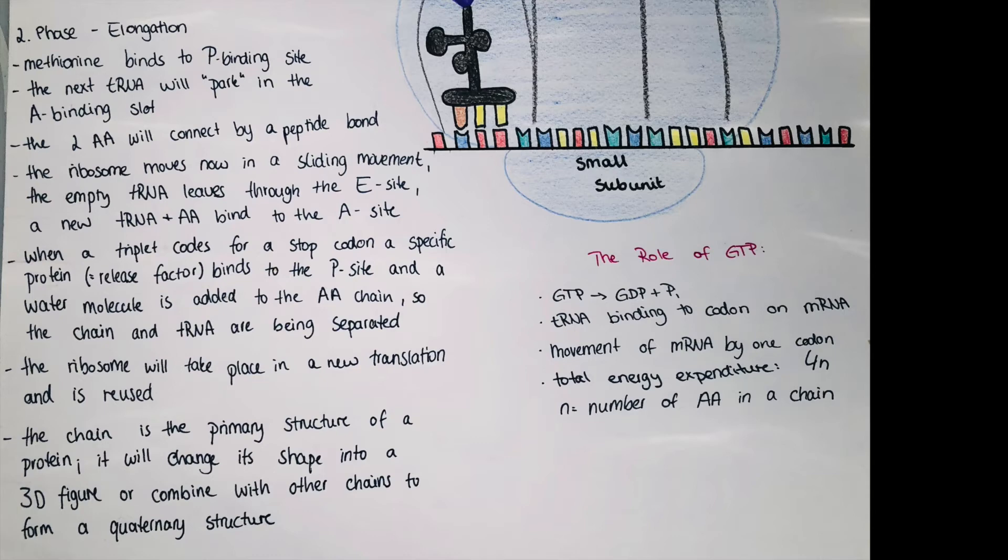Then the E site will be the exit site where the tRNA will leave after the amino acid connected to the tRNA is connected to the other amino acids so that the amino acids will build a chain which is connected to the P site of the ribosome. When a triplet codes for a stop codon, then a specific protein called a release factor binds to the P site. Instead of an amino acid, it carries a water molecule which is added to the amino acid chain.